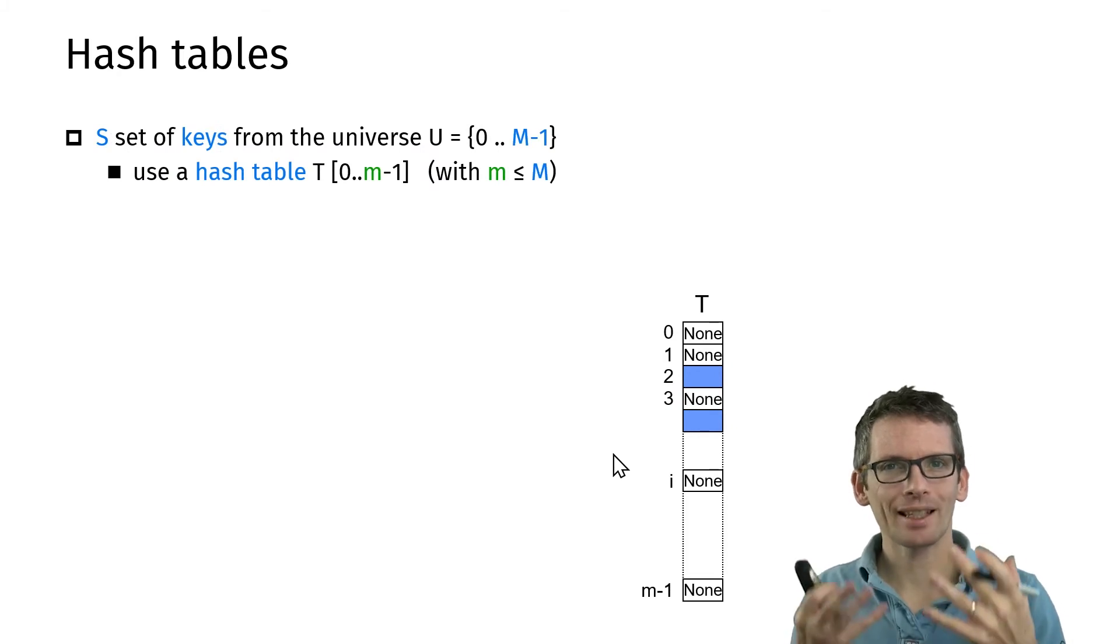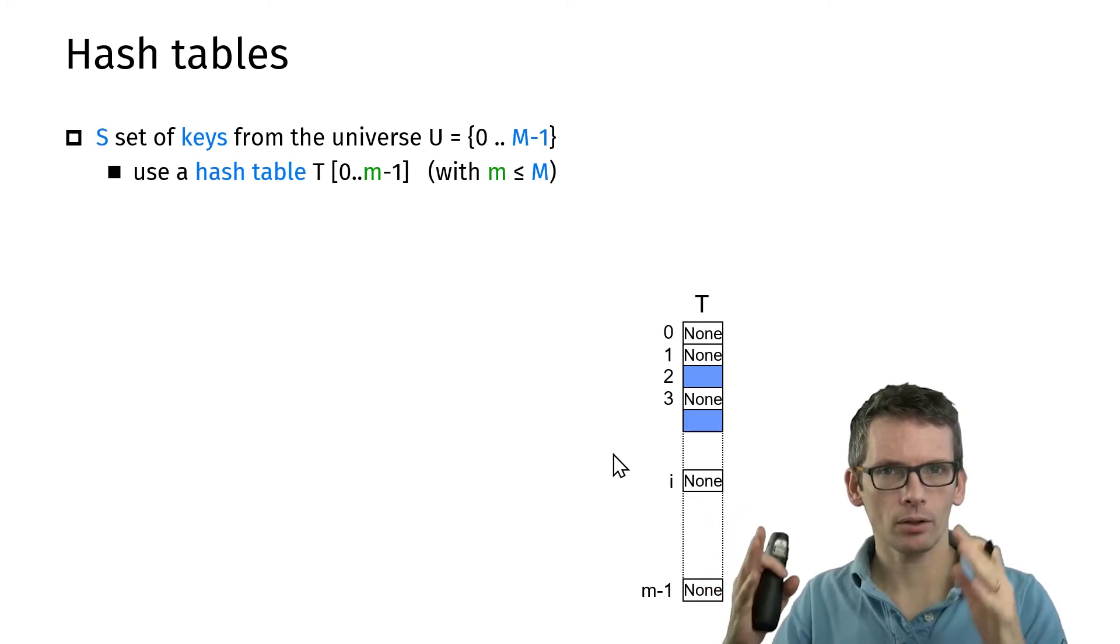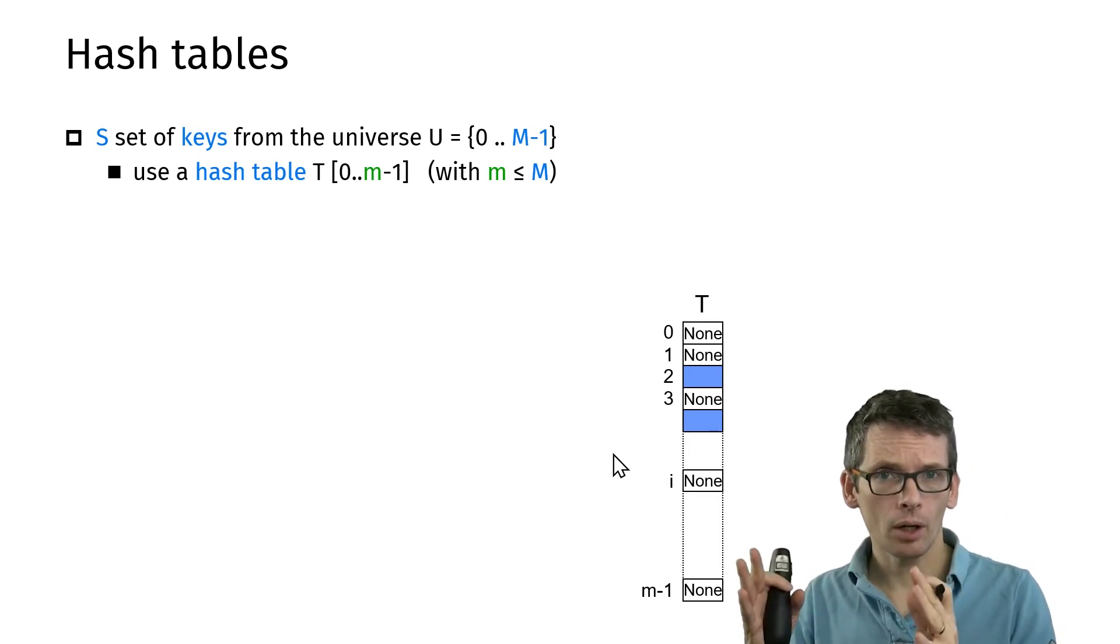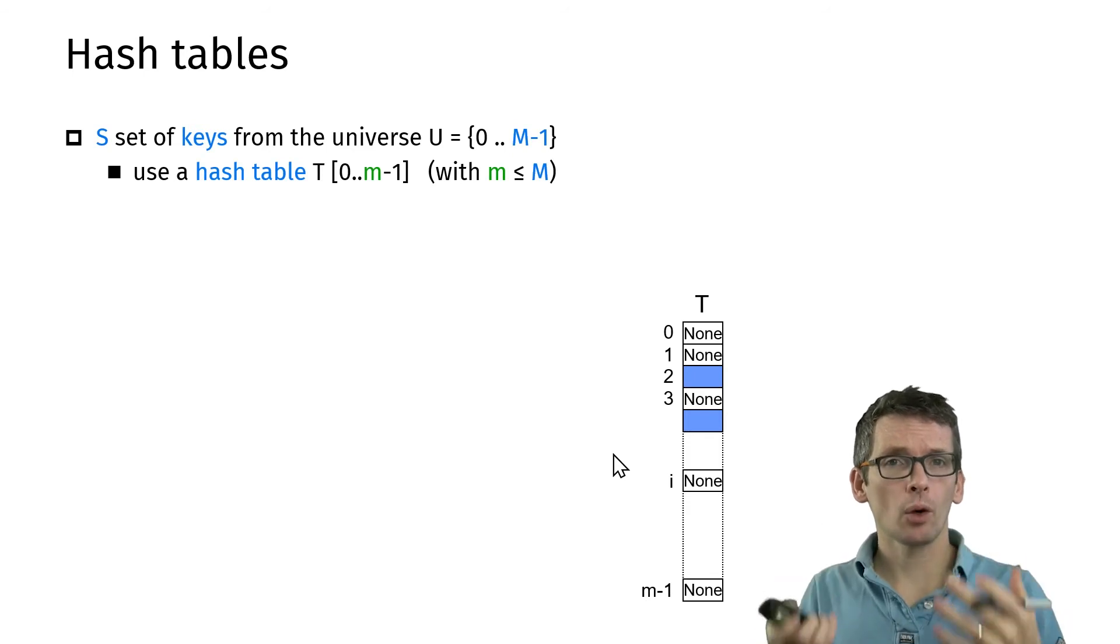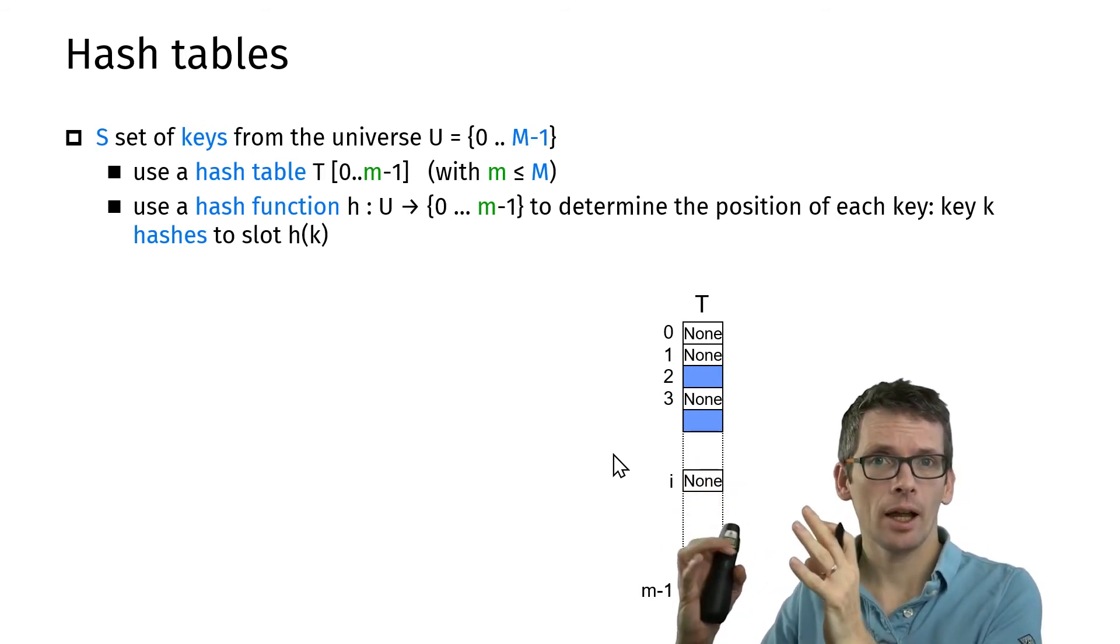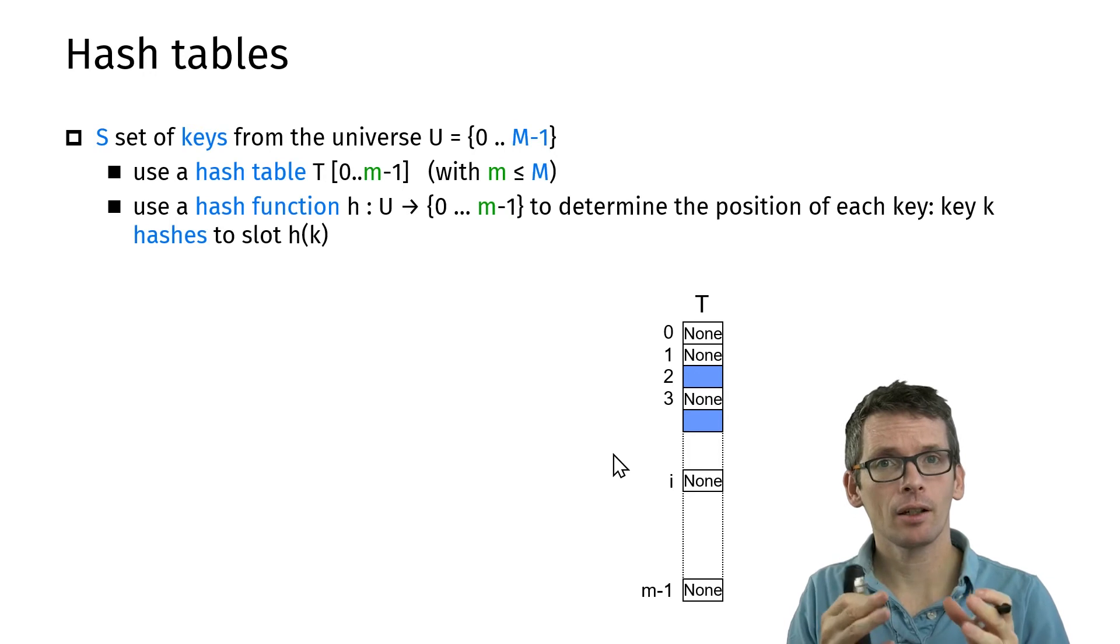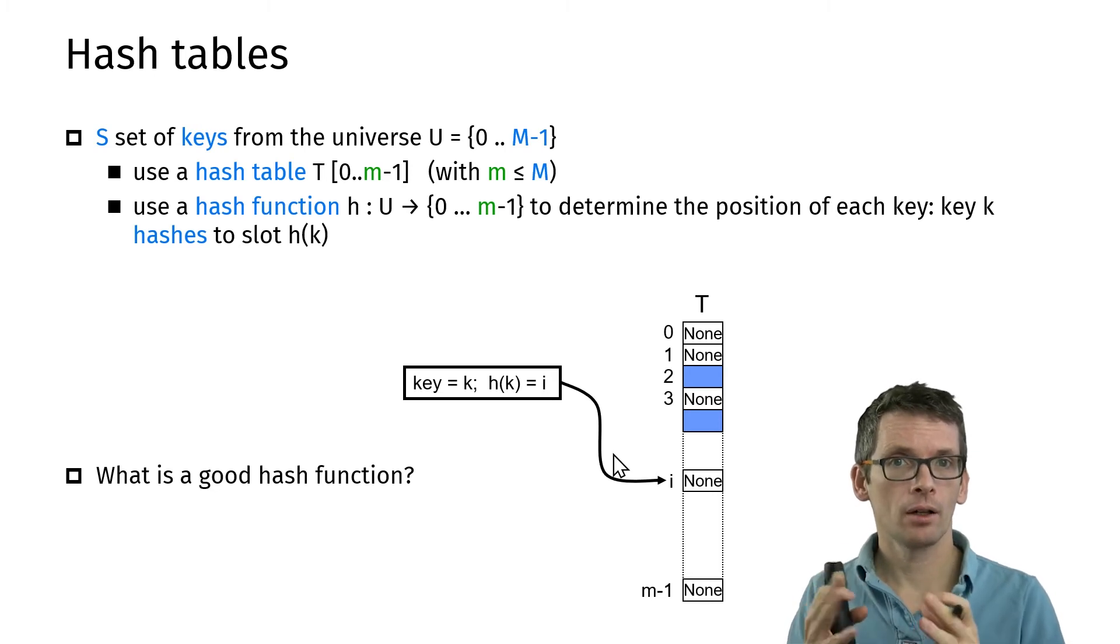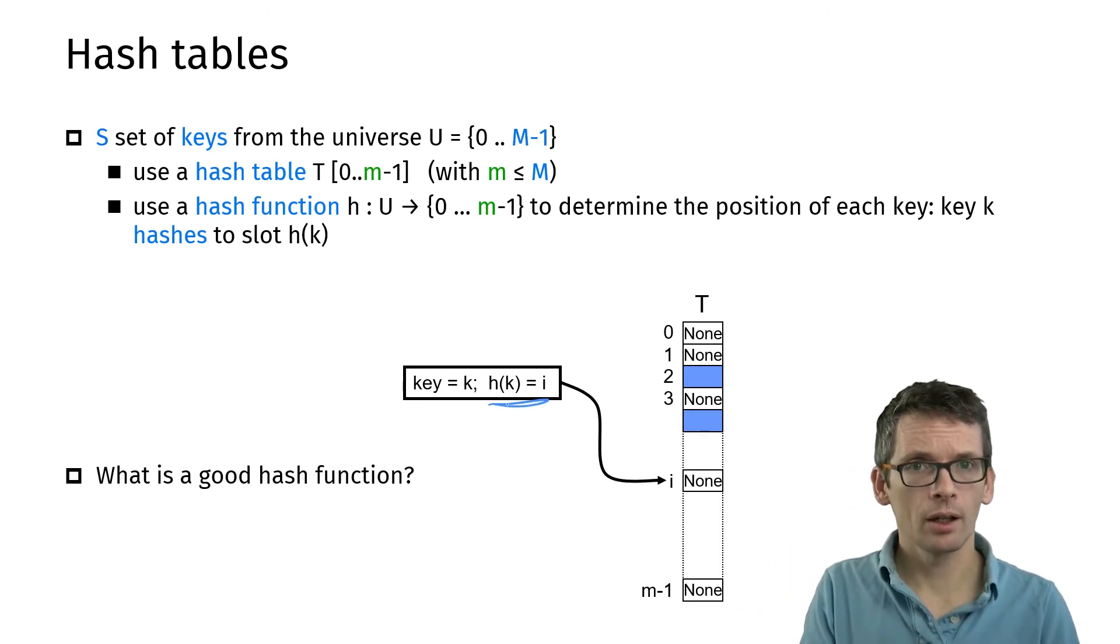Now we're ready to state what a hash table is in general. We have keys from a universe of integers 0 to big M minus 1, so size big M, and we want to store them in a hash table, an array of size small m, where small m is much smaller than big M. We're going to do so by using a hash function, and a hash function takes the universe where my keys are and maps it to integers in the range between 0 and small m minus 1. Then for a key, I'm going to use that hash function to decide into which slot to hash my key. If h(k) is i, I'm going to store that key on position i.